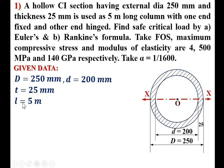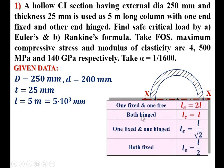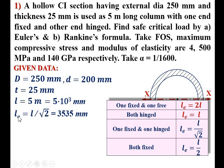Convert L from meters to mm: L = 5 × 10³ mm. With one end fixed and one end hinged, the effective length is L/√2. Substituting L = 5 × 10³ mm, the effective length L_E = 3535 mm.